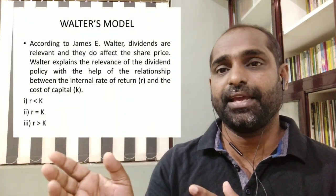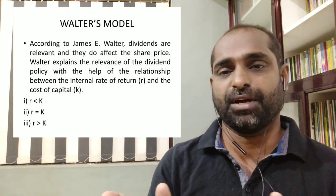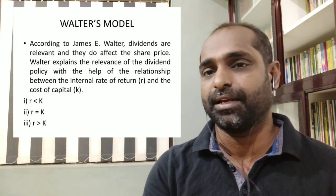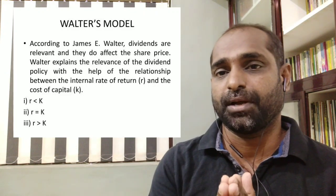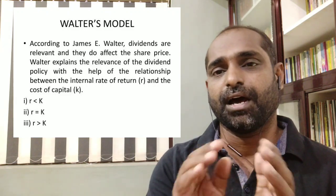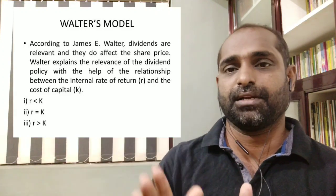Walter's model introduces three types of firms. The first is Growth Firms, where R is greater than KE — the actual rate of return exceeds the expected rate of return. The second is Normal Firms, where R is equal to KE — the actual rate of return equals the expected rate of return.